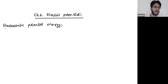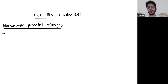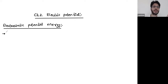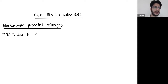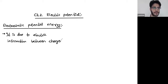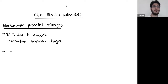Electrostatic potential energy by definition is: whenever you have electric forces in your system, say you have a positive charge and a negative charge, these two charges will interact with each other, and due to this interaction your system will have some net electric potential energy. So the cause of potential energy is electric interaction between charges.